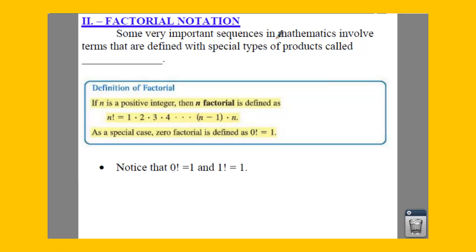Sometimes you have important sequences that involve special products called factorials. What a factorial is, is you're going to see some number that has an exclamation point behind it, and that means you're going to start multiplying all the numbers. So 1 times 2 times 3 times 4, all the way until you get up to that point.